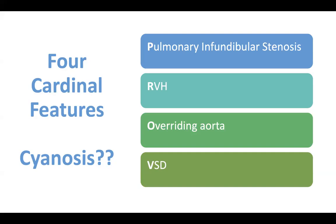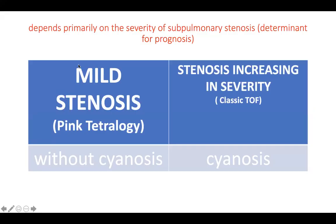Do all patients with Tetralogy of Fallot have cyanosis? The answer is no — we also have a pink Tetralogy. The degree of cyanosis depends on the severity of the subpulmonary stenosis. The more cyanotic, the more severe the stenosis, and the poorer the prognosis. Pink Tetralogy means there is only a mild stenosis, hence no cyanosis.